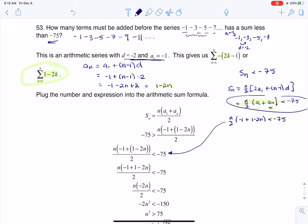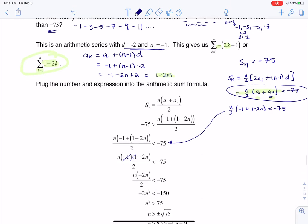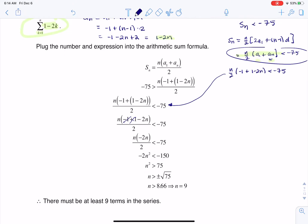So as I start to put this together, negative 1 plus 1, that's going to cancel. And then I'm going to take negative 2, divide it by positive 2, and that's just going to leave me with this negative here. n times n is n squared. So I'm looking at this inequality of negative 2n squared being less than negative 150.